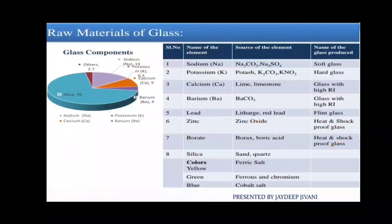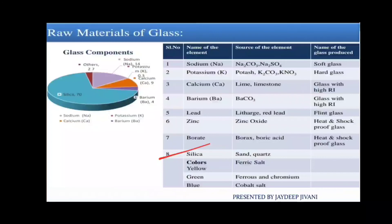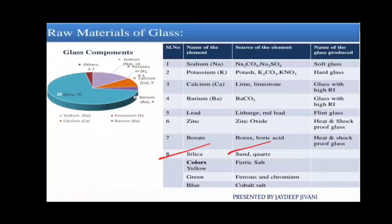Next element is silica. Silica is the most commonly used ingredient in all glass manufacturing — it is the main ingredient. Silica is sourced from sand and quartz. It is the main ingredient for all types of flat glass and other glass.